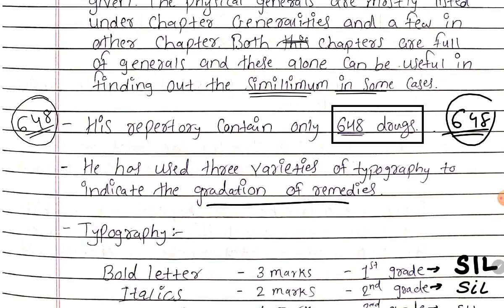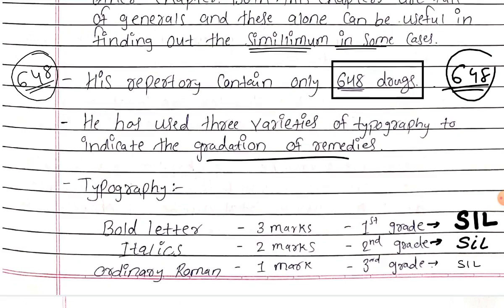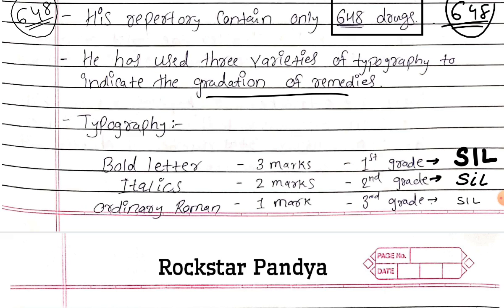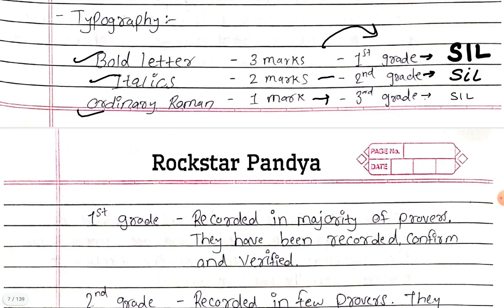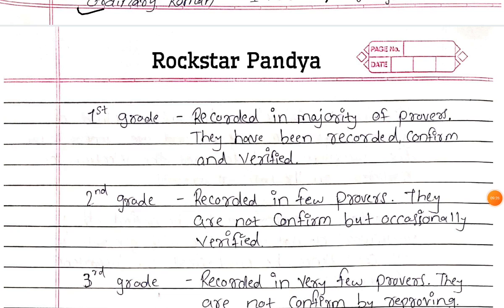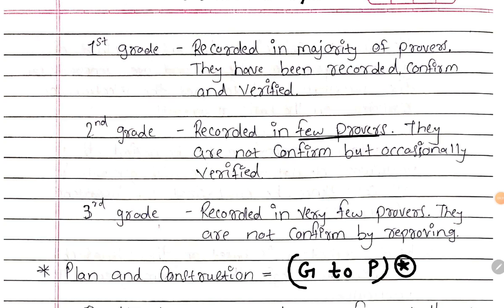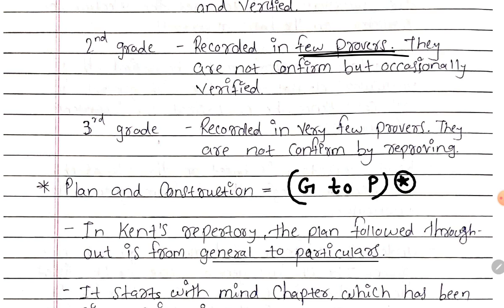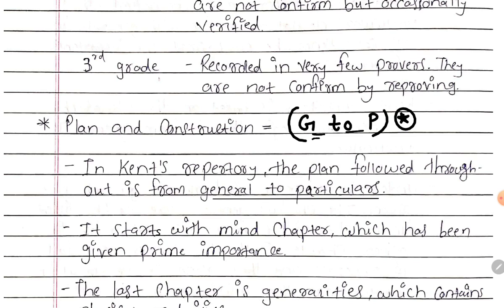He used three varieties of typography to indicate the gradations of remedy. The three-mark remedies are given in bold letters, the two-mark in italics, and the one-mark in ordinary Roman type. Three-mark remedies are first grade, two-mark are second grade, and one-mark are third grade. First grade symptoms are recorded in the majority of provers — they have been confirmed and verified. Second grade symptoms are recorded in only a few provers — not confirmed but occasionally verified. Third grade symptoms are recorded in very few provers and are not confirmed by reproving.